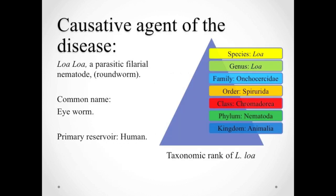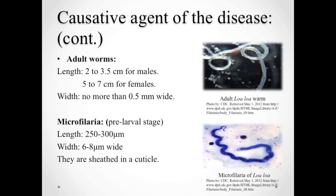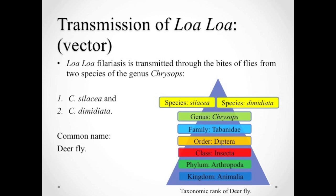The causative agent of this disease is Loa loa, which is a parasitic filarial roundworm that belongs to the phylum Nematoda. Its common name is eye worm. Humans are known to be the primary reservoir for this parasite. Adult male worms range in length from 2 to 3.5 centimeters, while adult female worms range from 5 to 7 centimeters. Both male and female are no more than 0.5 millimeters wide. Microfilaria are 250 to 300 micrometers long and 6 to 8 micrometers wide, and they are sheathed in a cuticle.